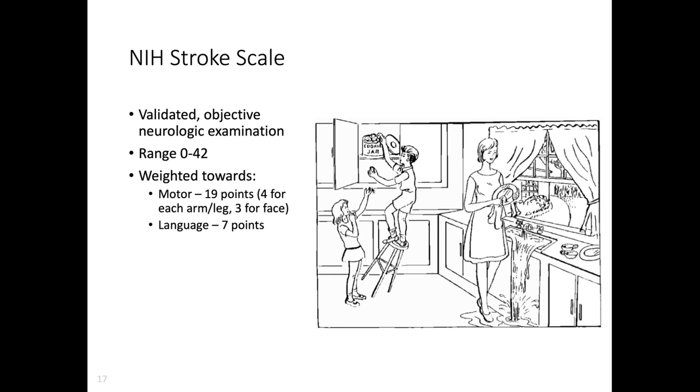The total range on the stroke scale is zero to 42, but that's if both sides are abnormal. Typically the most severe unilateral left MCA stroke will be a stroke scale of 20 or 22 or 25. The stroke scale is weighted towards motor and language. You get four points for each arm and three points for your face. Motor components are 19 points total - eight for each side for arms and legs. Language components are seven points. When thinking about what's a major stroke versus a minor stroke, if someone has a stroke scale of two but it's their dominant arm, that would be disabling.